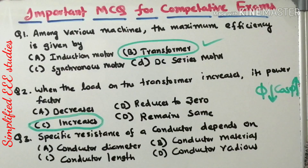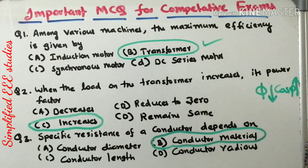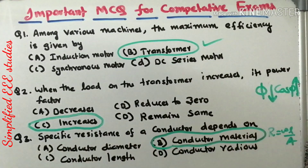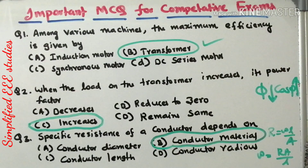Question 3: specific resistance of a conductor depends on which factor? Options are conductor diameter, conductor material, conductor length, and conductor radius. The best answer is conductor material — specific resistance always depends on the nature of the material. The equation R = ρL/A gives resistance depending on length and inversely proportional to area of cross section. From this, ρ = RA/L. But the best answer here is conductor material, option B. Specific resistance directly depends on the nature of the material.